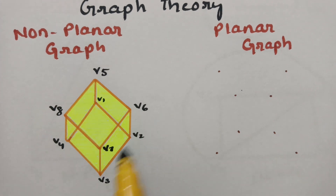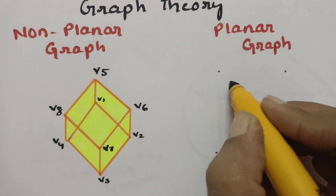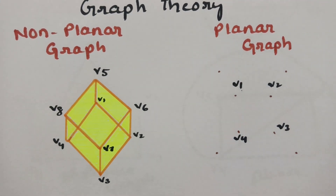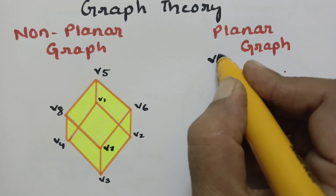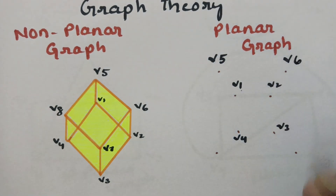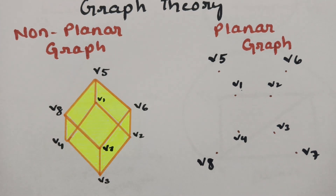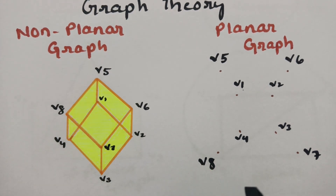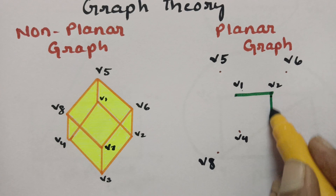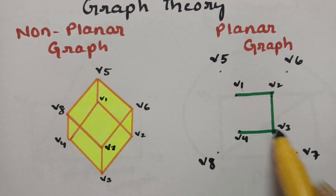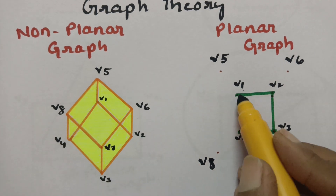Redrawing: V1, V2, V3, V4 on one side and V5, V6, V7, V8 on another side. Connecting: V1 to V2, V2 to V3, V3 to V4, and V1 to V4 — no edge crossing. Then V5 to V6, V6 to V7, V7 to V8.